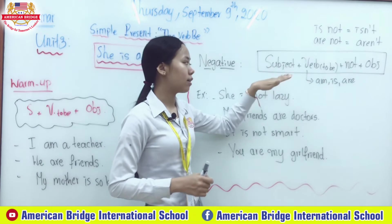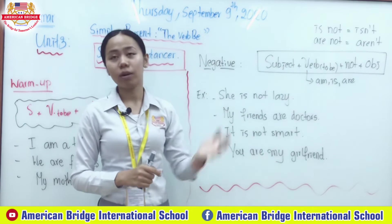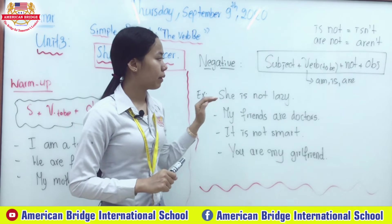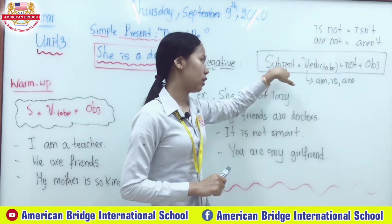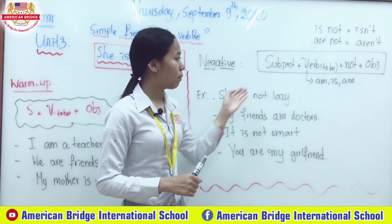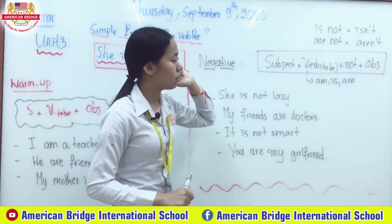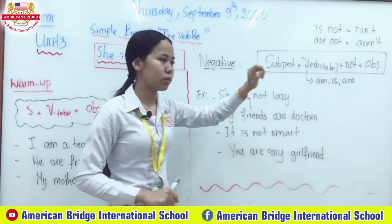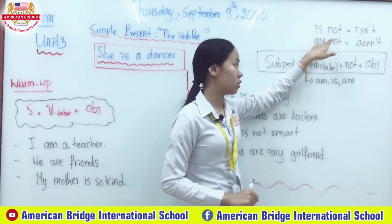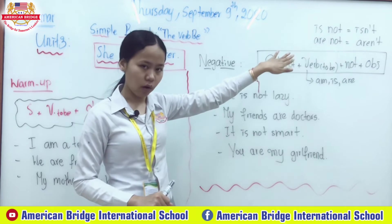For the negative form, we still have the subject in front of the verb 'to be,' but we add 'not' after it. The structure is: Subject + to be + not + object. Remember, 'not' does not go in front of the verb. The verb 'to be' forms are am, is, are. You can use the full form — 'is not' — or the short form 'isn't.' Similarly, 'are not' can be shortened to 'aren't.'